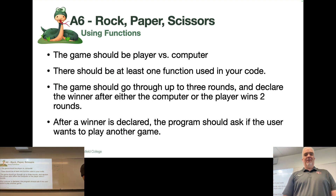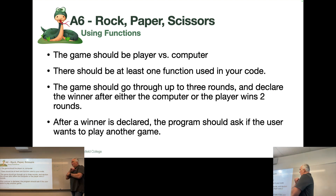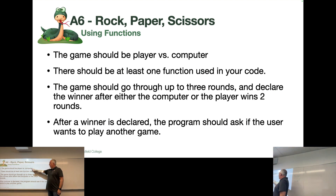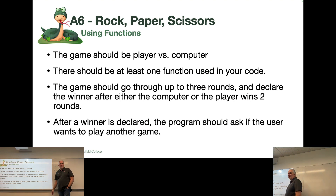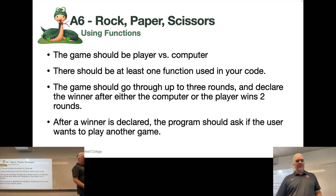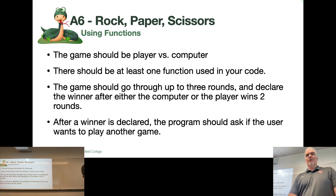So it's an interesting conundrum. We're going to use player versus computer on this. There should be at least one function in your code, and you will need to go through three rounds, keeping score, where the first player to win two rounds wins the game. After a winner is declared, ask the user if they want to play again.